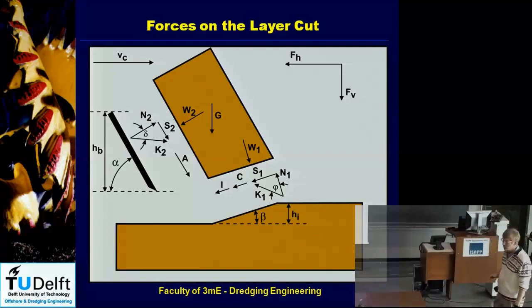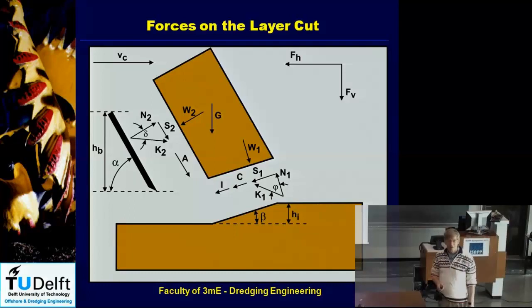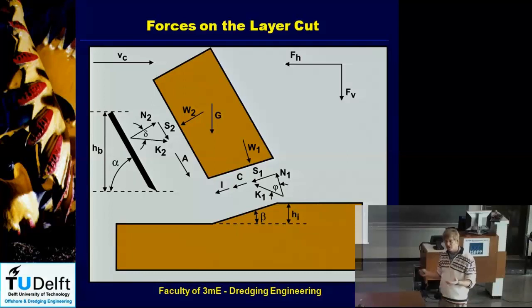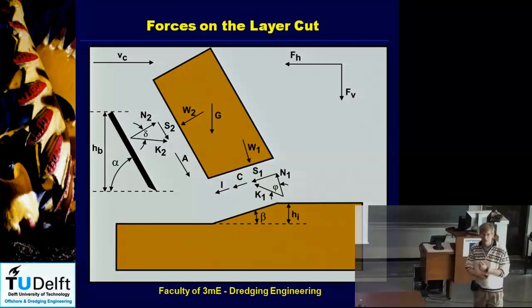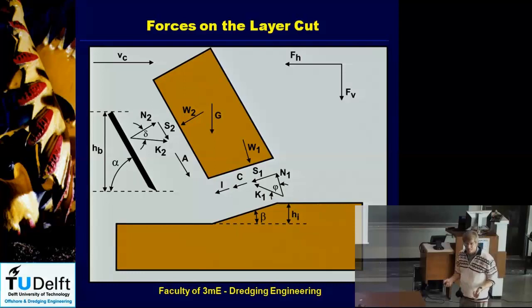The external friction coefficient can never be bigger than the internal friction coefficient, and the same applies for the relation between cohesion and adhesion. Adhesion can never be bigger than cohesion — in fact, theoretically, it could.